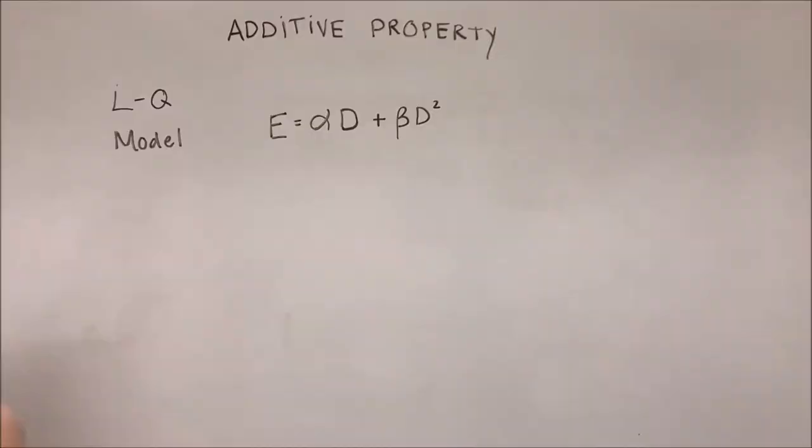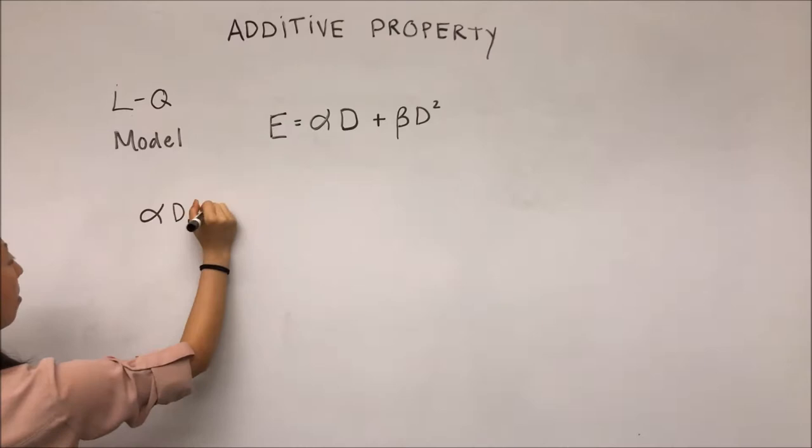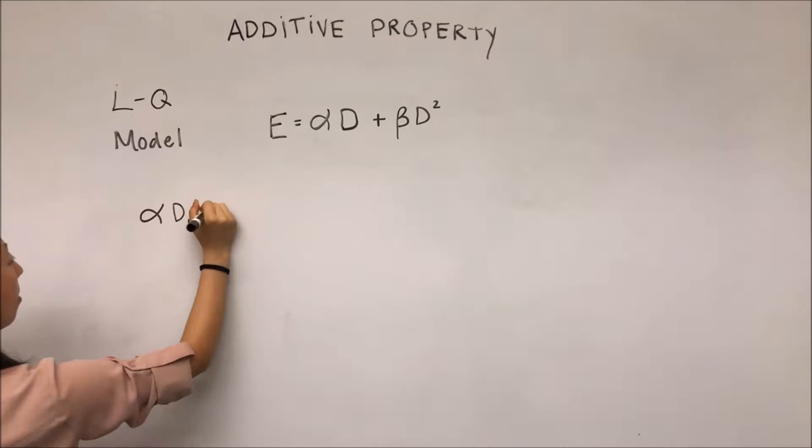Because of the quadratic term, there is no longer an equality as the single composite radiation dose d1 plus d2 has an extra term 2 beta d1 d2.